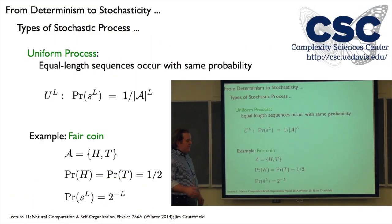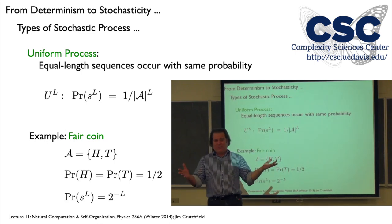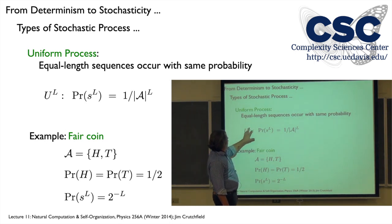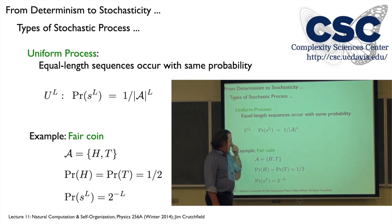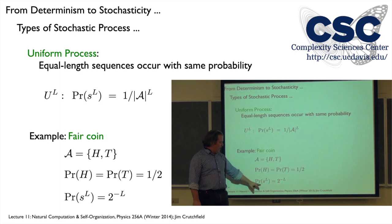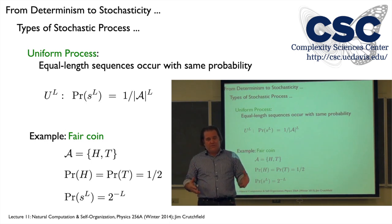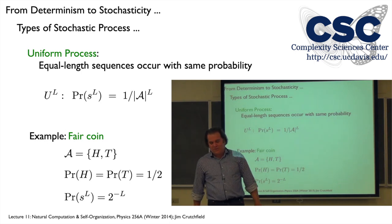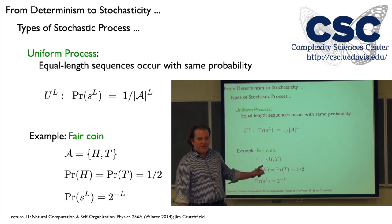A simple kind of stationary stochastic process is the uniform process. Equal-length sequences occur with the same probability. The probability of words of length L is simply one over the alphabet size to the L. For a fair coin with heads and tails, the word distribution for all lengths is just one over two to the L. For length-four words there are sixteen of them, and each occurs with probability one-sixteenth. It's a nice compact representation and a good reference point — probably the most uninteresting process we'll look at, but whenever we introduce new properties, the first thing we do is calculate it for this simple case.